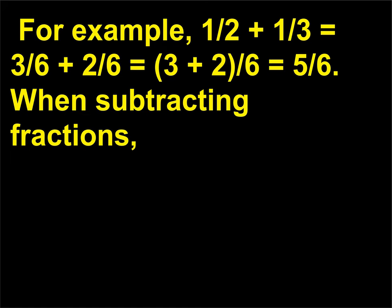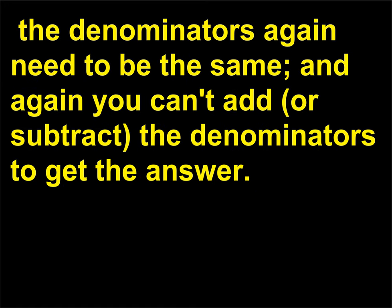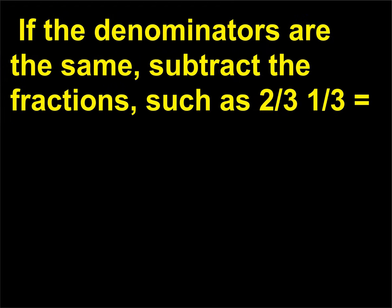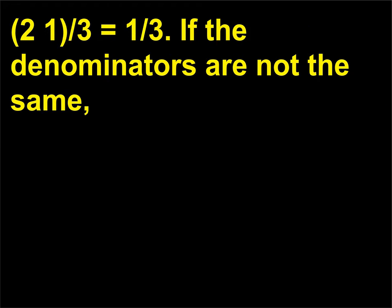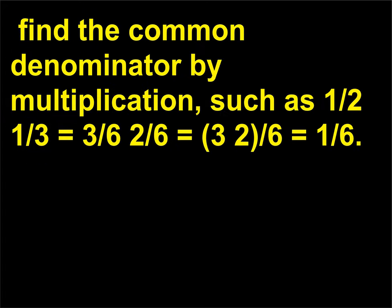When subtracting fractions, the denominators again need to be the same, and again you can't add or subtract the denominators to get the answer. If the denominators are the same, subtract the fractions, such as 2/3 − 1/3 = (2−1)/3 = 1/3. If the denominators are not the same, find the common denominator by multiplication, such as 1/2 − 1/3 = 3/6 − 2/6 = (3−2)/6 = 1/6.